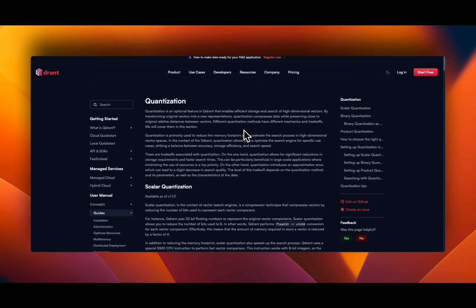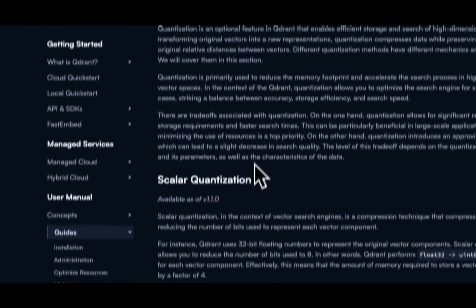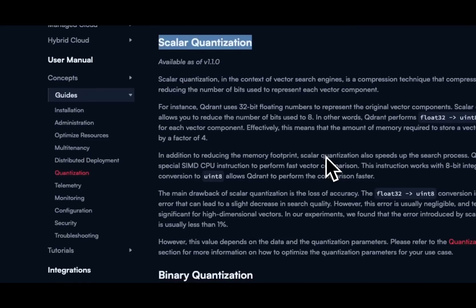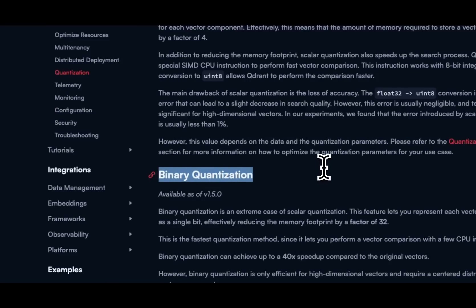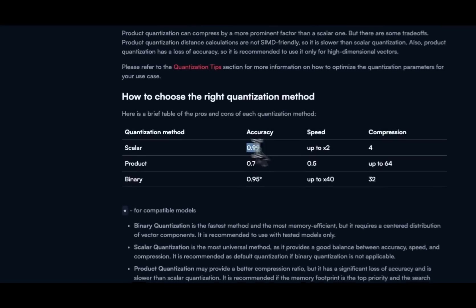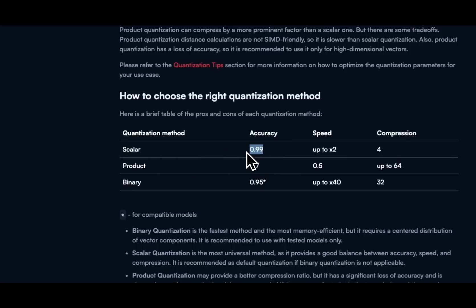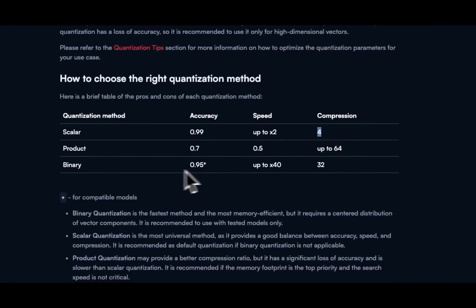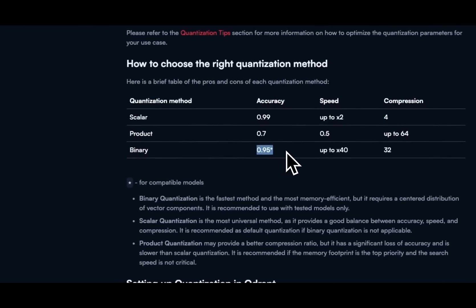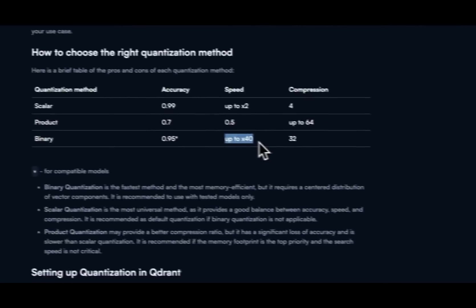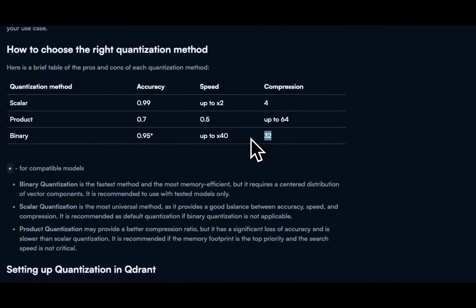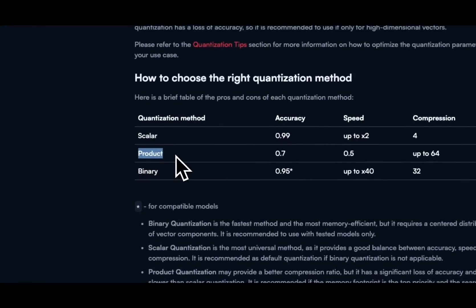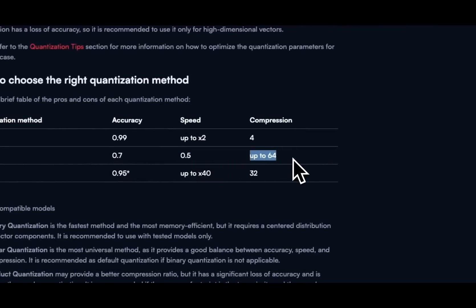In this last section, I'm going to show you how you can use an open-source vector store such as Qdrant to store these quantized models. Qdrant supports both scalar quantization — meaning 8-bit quantization — and binary quantization. According to them, here is a reference table: for scalar quantization, it can preserve up to 99% accuracy, gives you 2 times speedup, and 4 times compression. For binary quantization, depending on the model, it can give you up to 95% of the baseline accuracy, up to 40 times the speed, and 32 times compression. They also have their own mechanism called product quantization, which gives you much lower accuracy at much reduced speed but much higher compression.